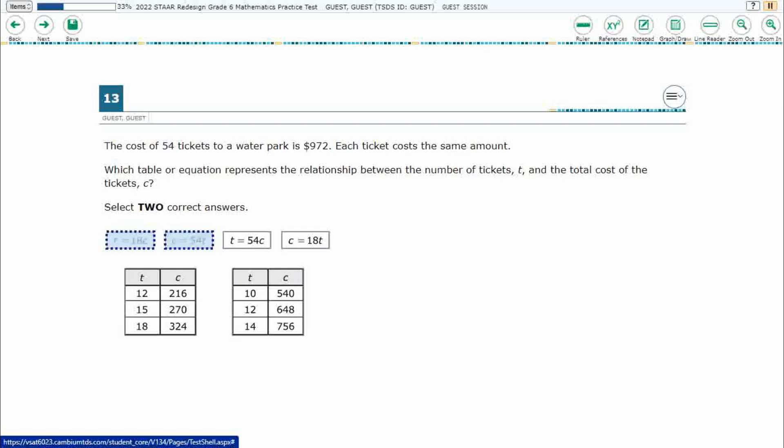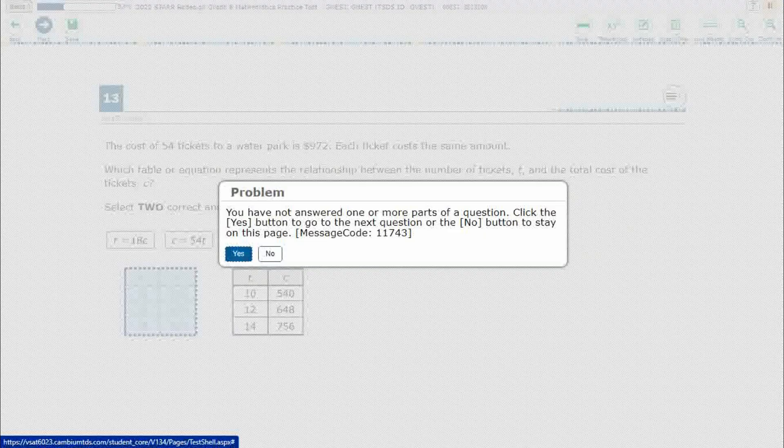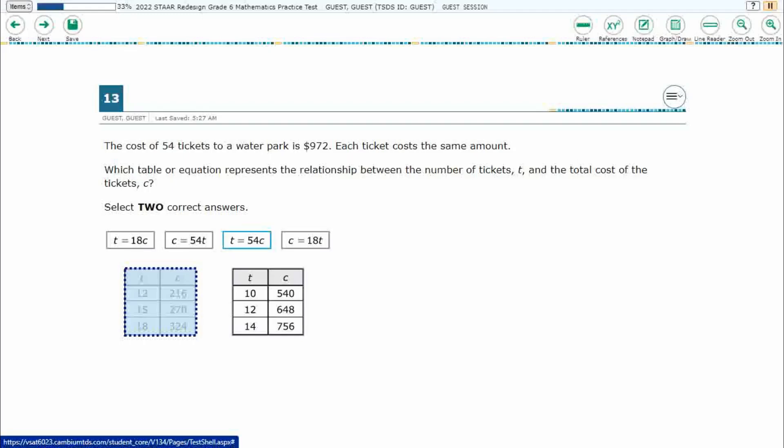My correct answers could be two equations. I can also select these two tables, or I can select one of each. Now, if I've already selected two, it won't let me select a third. And if I only select one and try to move on, it's going to say you have not answered the whole thing. Make sure you select two, but it could be two equations or two of these tables.